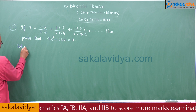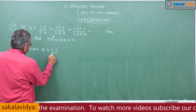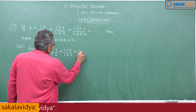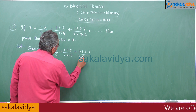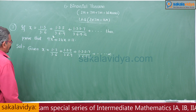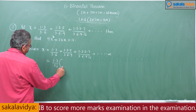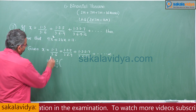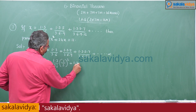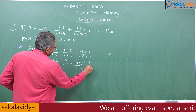Given: x = 1·3/(3·6) + 1·3·5/(3·6·9) + 1·3·5·7/(3·6·9·12) + … infinity. Now, 1·3 means 2 factors, so 2 factorial means 6/2 = 3; 3² gives 1/9 = (1/3)². For 1·3·5, that is 3 factors, so it becomes (1/3)³ + … infinity.